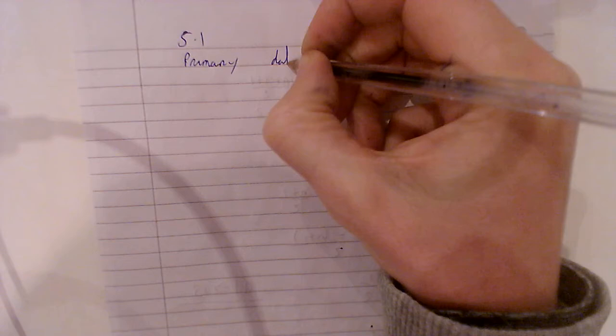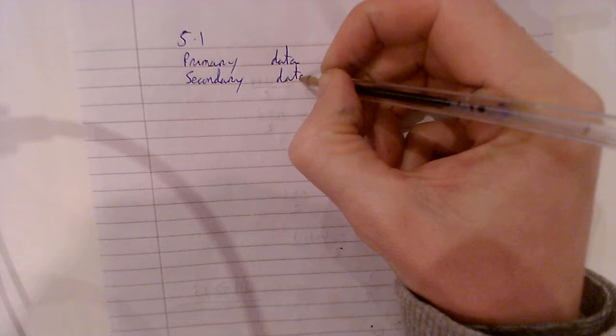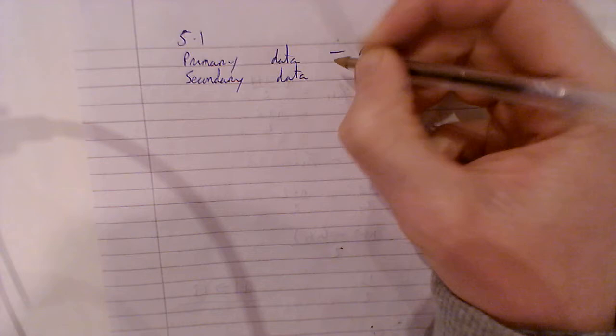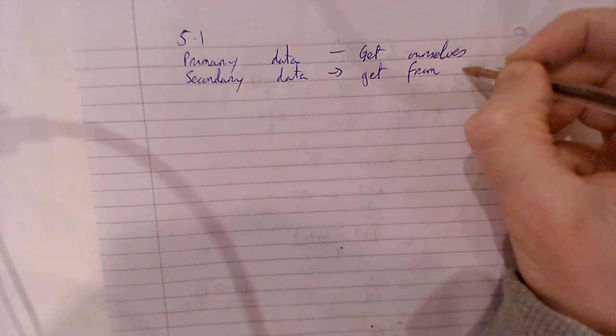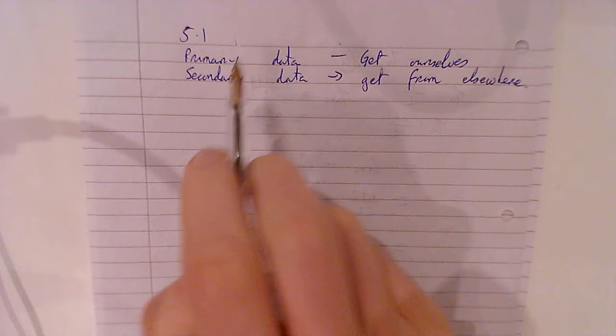So first of all, I'm going to start off with data that we collect ourselves and data that we don't collect ourselves. So primary data is data we collect ourselves. Secondary, we do not collect ourselves. So I might do a survey and this one, get from elsewhere. So newspaper, internet, wherever, but you do not get it yourself. I do a survey, I'll take the results of someone else's survey. There's the basic thing of it.